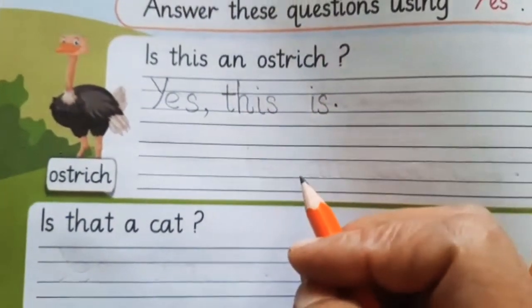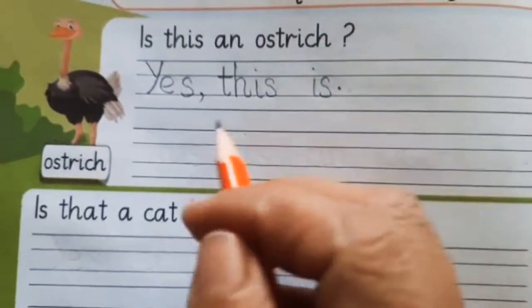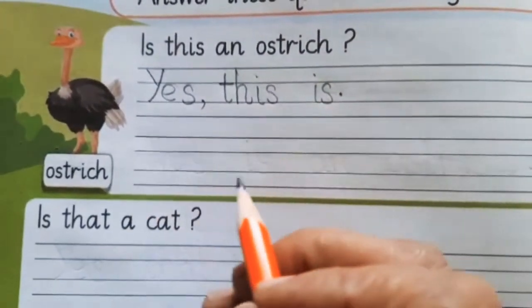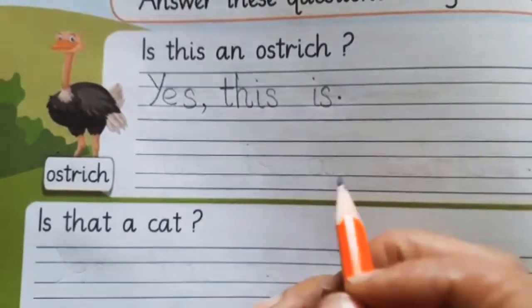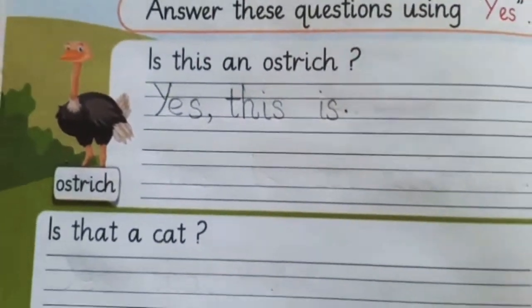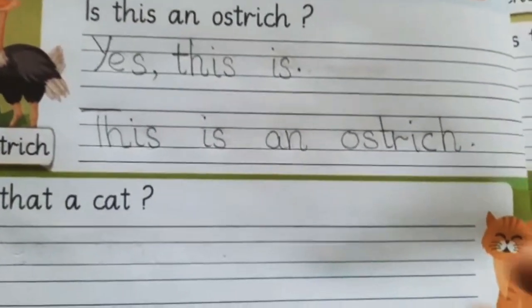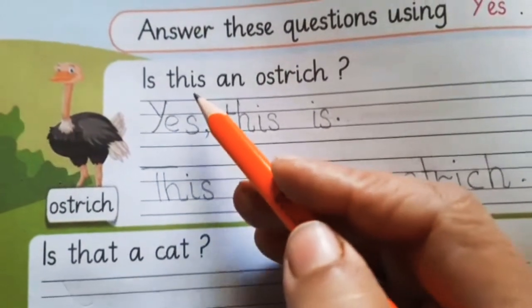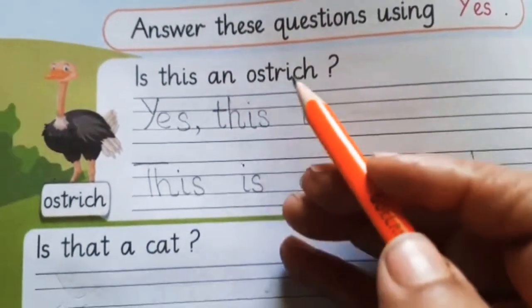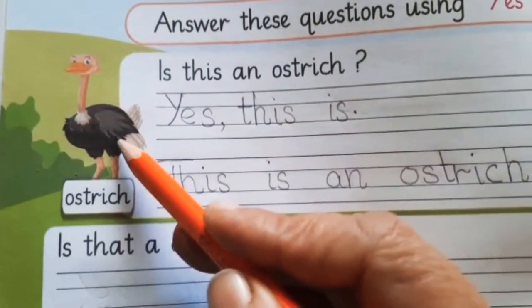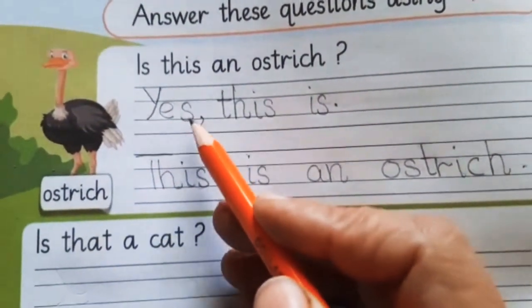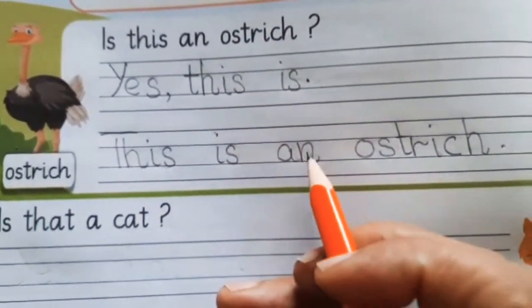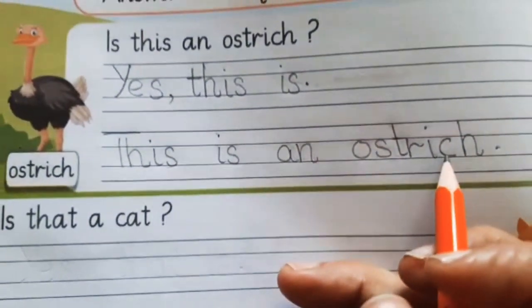Our answer is completed. When we write: yes, this is — this is an ostrich. Like this. Is this an ostrich? Yes, this is an ostrich.